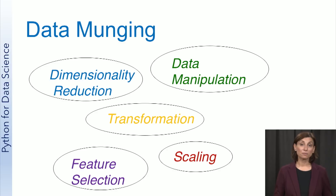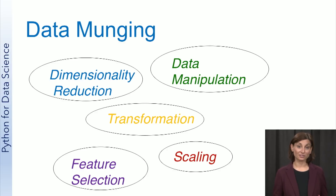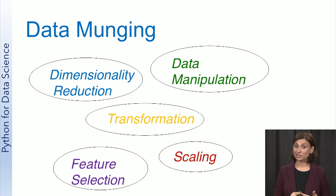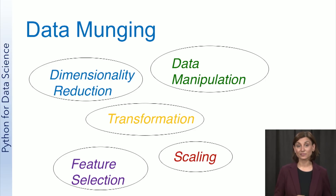Some operations for this data munging, wrangling, and preprocessing include scaling, transformation, feature selection, dimensionality reduction, and data manipulation. Let's look at these in further detail.